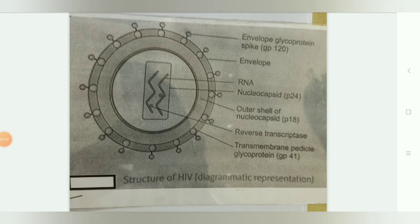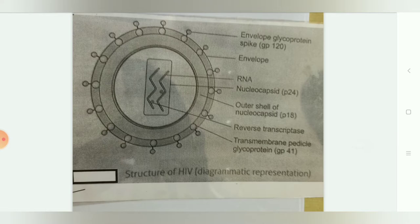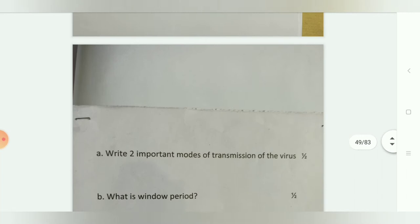Welcome back guys. Today we continue with our previous video on microbiology spotter questions. The first topic is the structure of HIV. You can see the developing glycoprotein gp110, RNA nucleocapsid, outer shell of nucleocapsid, reverse transcriptase, transmembrane peptide, and glycoprotein gp41.